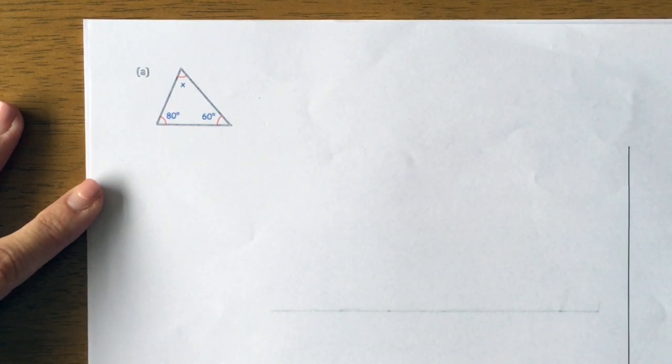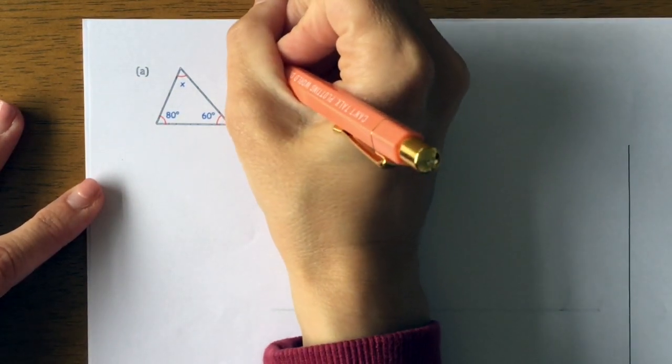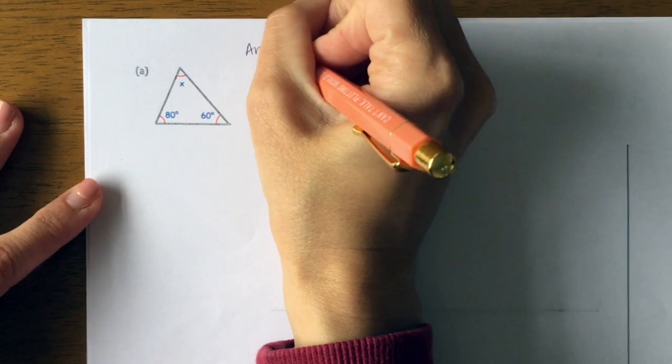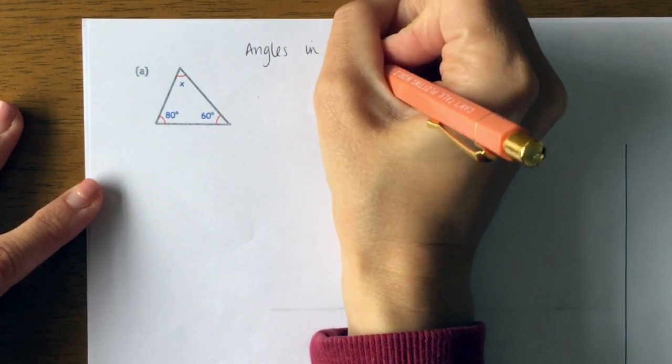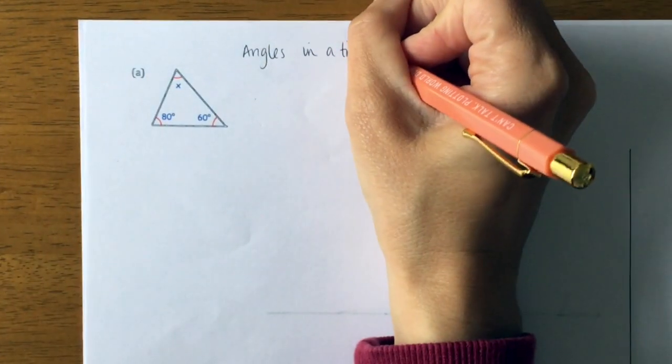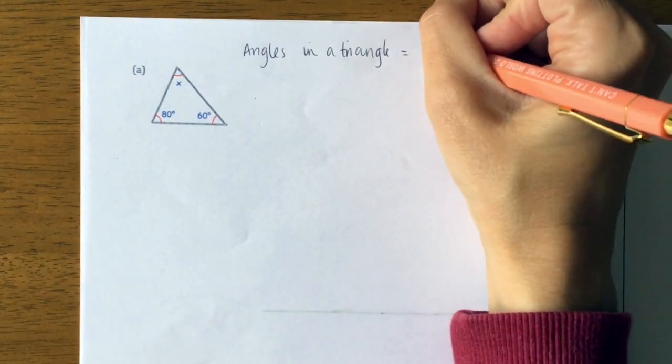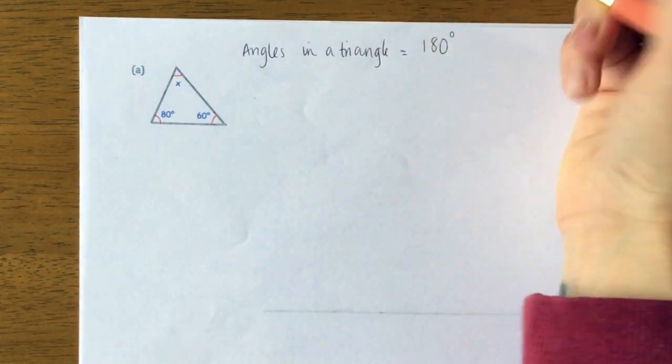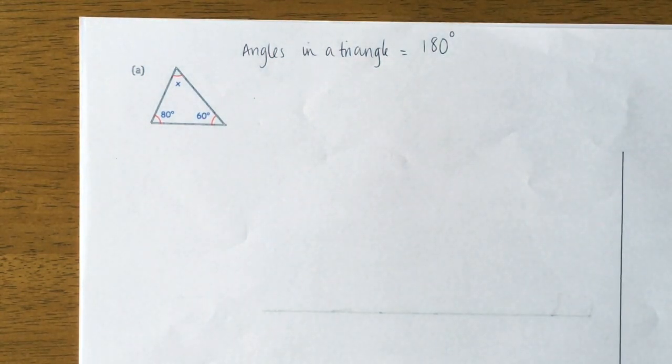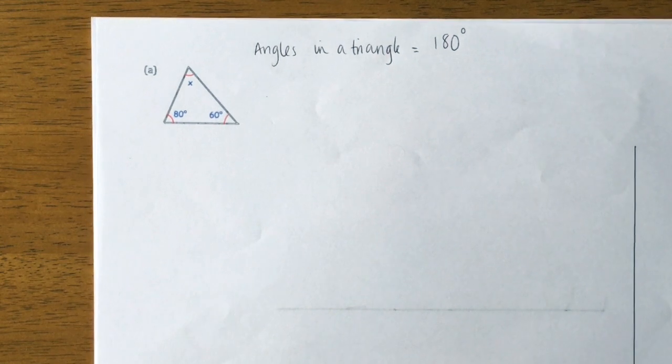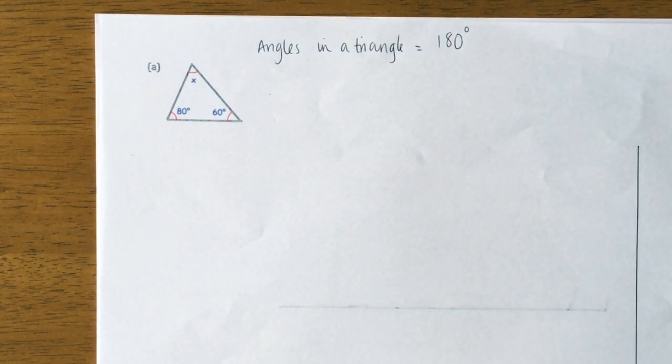This video is about finding missing angles inside a triangle. In my last video I told you that angles in a triangle equal 180 degrees, and we proved that by showing that the three angles fit together on a straight line. So what we need to do, similarly like we did when we were finding angles on a straight line, is find a missing one inside the triangle.